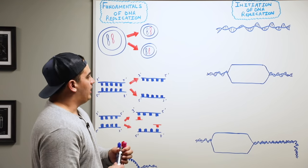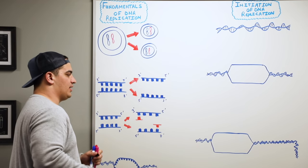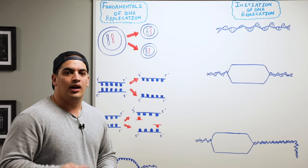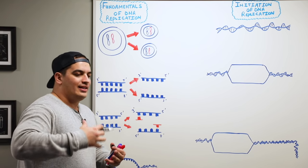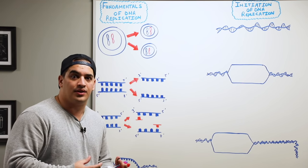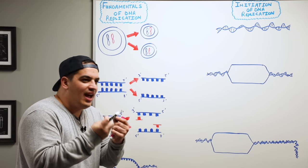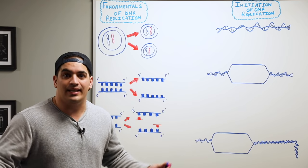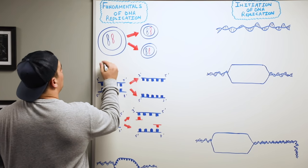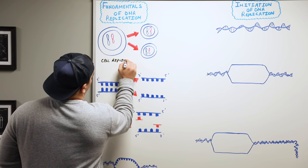When we talk about DNA replication, the first thing we need to talk about is a couple fundamental points that we're going to build on throughout this lecture. The first thing is: why do we do DNA replication? The whole point is that in order for cells to be able to replicate and make more cells, we need the DNA within those cells to replicate, because DNA is the genetic portion of the cell — it's what makes a cell what it is. So the whole purpose of DNA replication is to allow for cell replication, or what we refer to as the cell cycle.